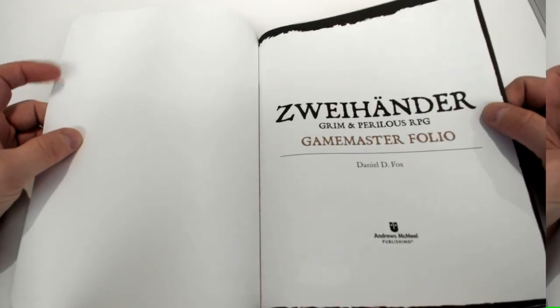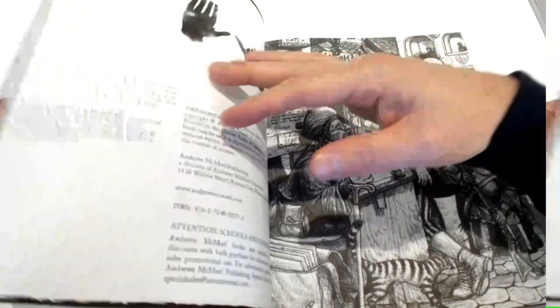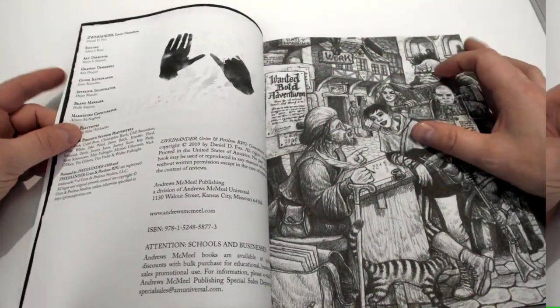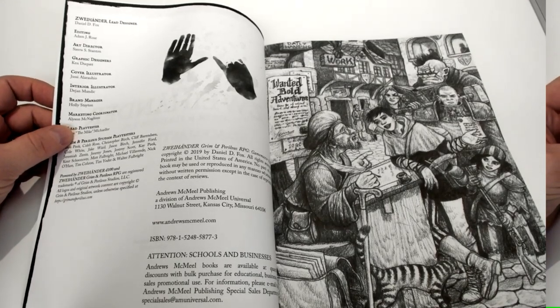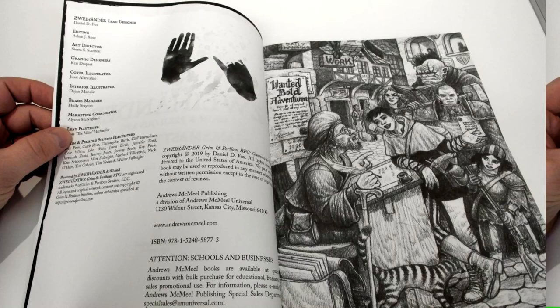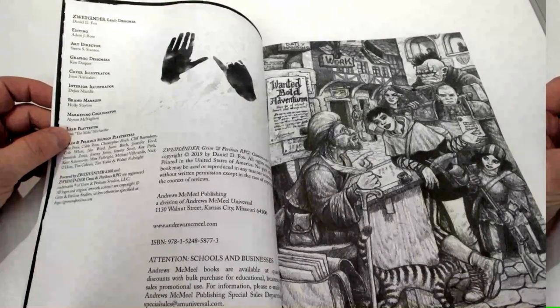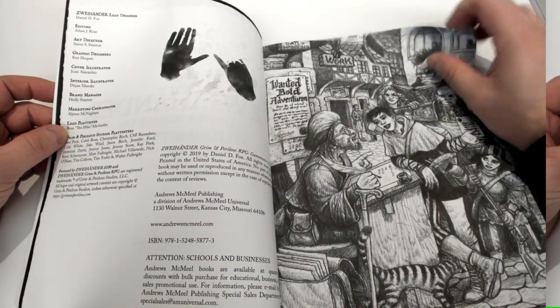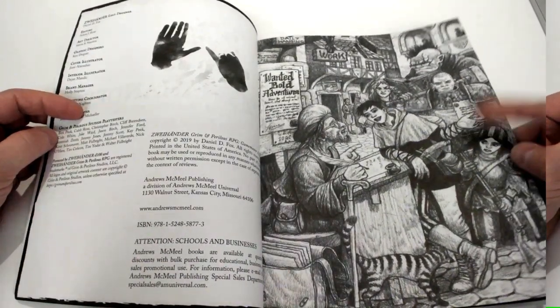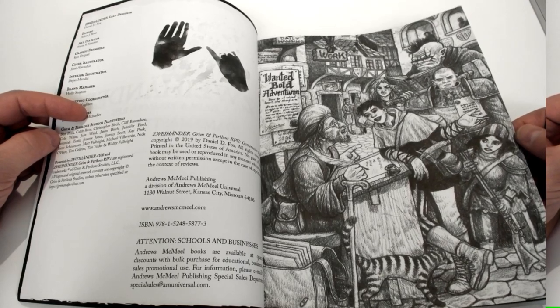So if we start to go inside, here's the print matter up front. Andrews McMeel Publishing is the publisher on all Zweihander products now. We have our credits page - this was originally designed by Kim Duquette, but the new version is designed by Sierra Stanton. We open up with a big image to evoke that you're the game master, you have the player characters, and you're the one who's basically telling the story.